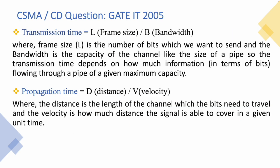The transmission time is frame size divided by bandwidth. Frame size is the amount of data being sent in the cable and bandwidth is the maximum capacity of the channel. For example, if we are sending water in a pipe, the maximum size of the pipe is bandwidth and the amount of water sent in a single unit is the frame size — that is, the number of bits you are sending.